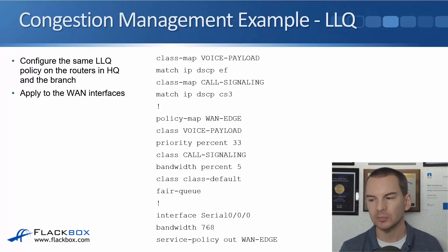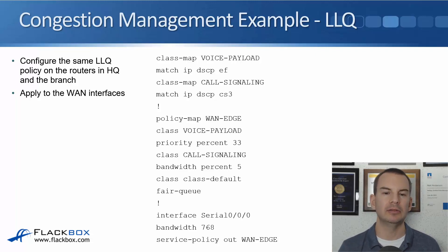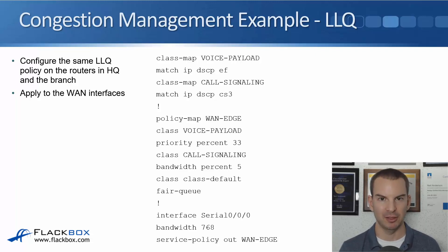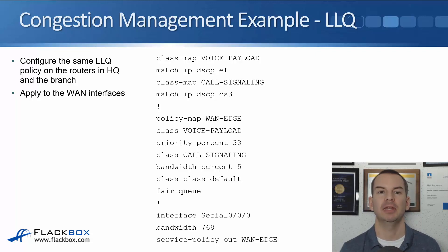For the CCNA exam, you do not need to know this configuration. I'm showing it here because it makes it easier to understand what's happening when you see the configuration, but you don't need to memorize it for the exam. For the exam, you need to understand the theory — what QoS is, the different QoS mechanisms like classification and marking, congestion management which is queuing, and also policing and shaping, which is coming up in the next lecture. You'll need the configuration knowledge when you move on to specializing or going to the CCNP level.